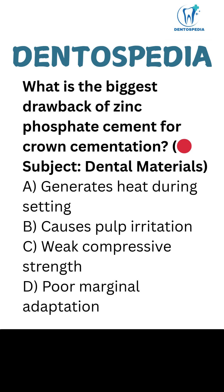What is the biggest drawback of zinc phosphate cement for crown cementation? Option A: generates heat during setting. Option B: causes pulp irritation. Option C: weak compressive strength. Option D: poor marginal adaptation.